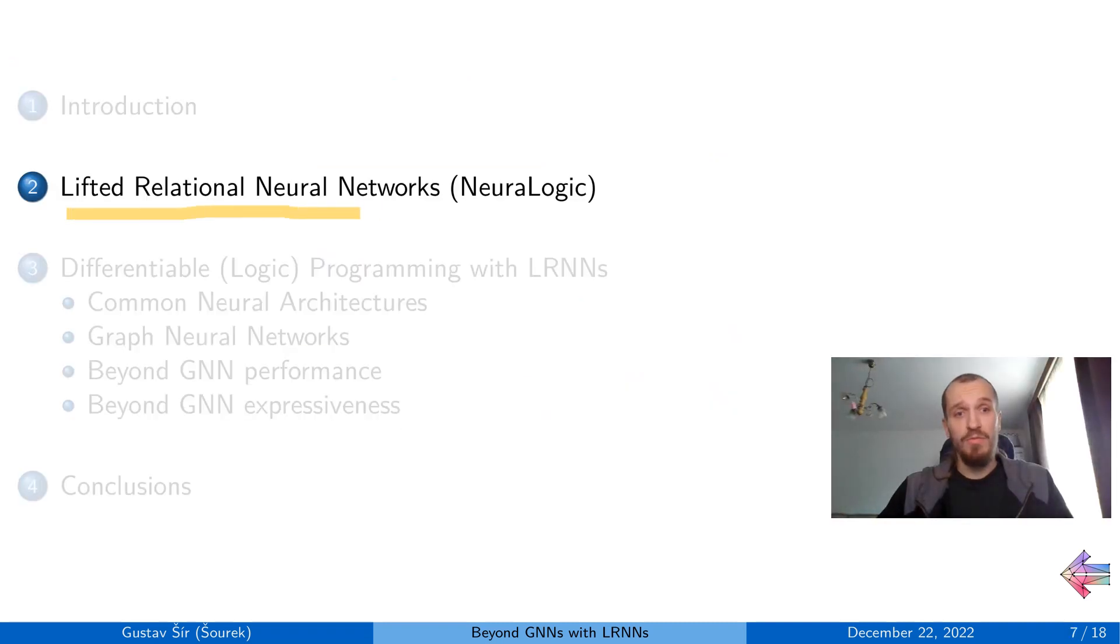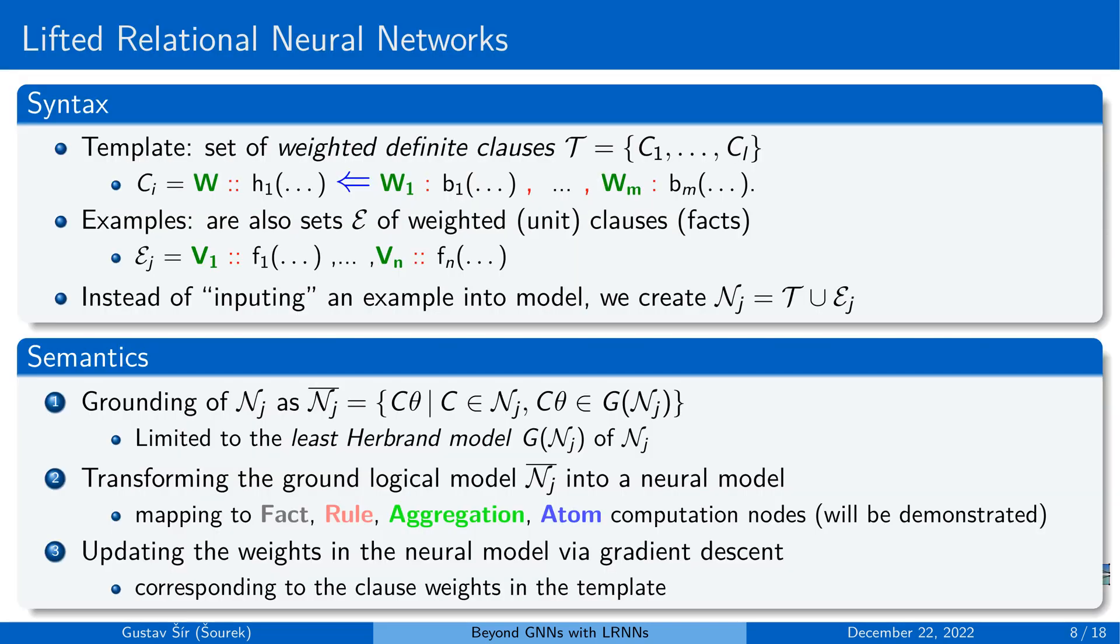So with that we move to the framework itself, which uses this lifting idea to facilitate relational learning in neural networks instead of graphical models. So syntactically, somewhat similarly to the Markov logic networks, a lifted relational neural network is a set of weighted definite clauses. And these are commonly written in the form of implication rules in the context of logic programming, which we follow quite closely.